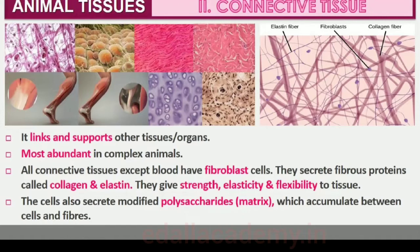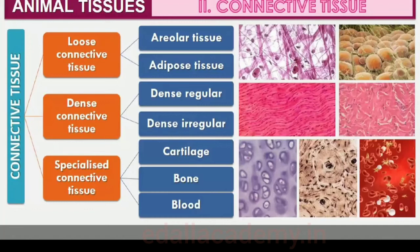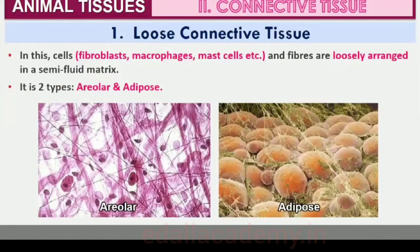Connective tissues are classified into three types: Loose connective tissue, Dense connective tissue, and Specialized connective tissue. Loose connective tissue has cells and fibers loosely arranged in a semi-fluid ground substance, for example, areolar tissue present beneath the skin. Often it serves as a support framework for epithelium.